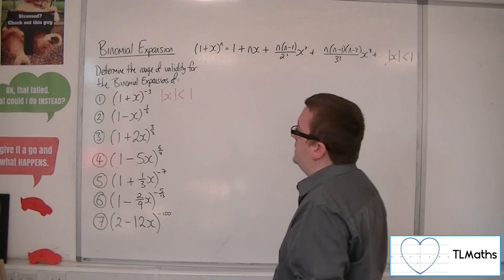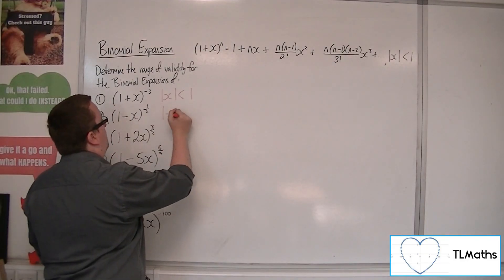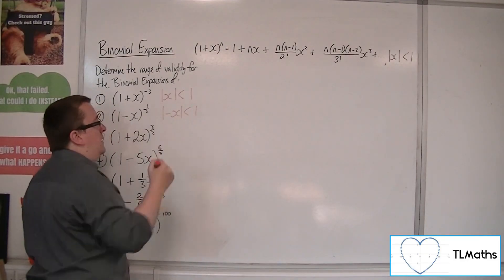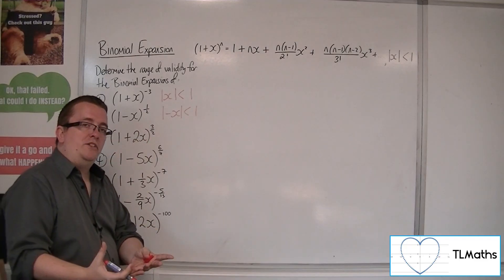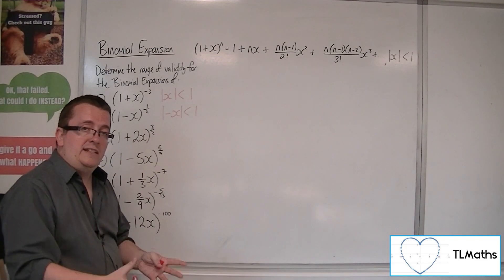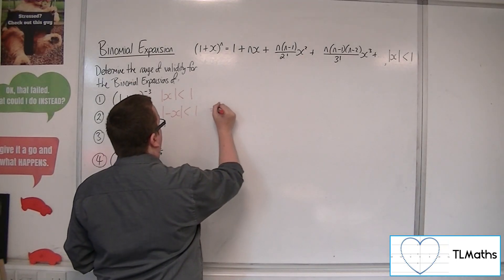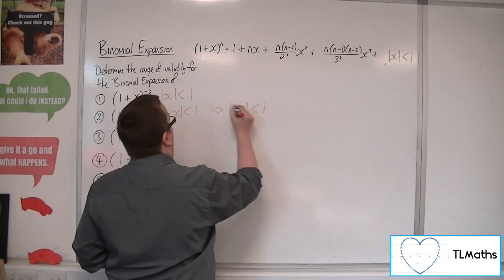So (1-x)^(1/2), this time I would replace the x with -x. So we'd have |-x| < 1. But because we've got the modulus signs around it, the modulus signs take care of the negative sign. And so this is the same thing as |x| < 1.